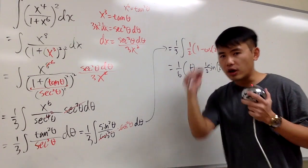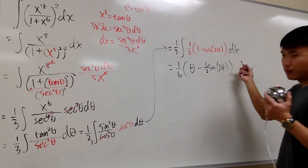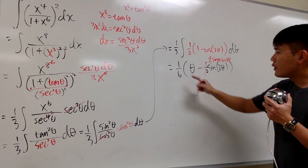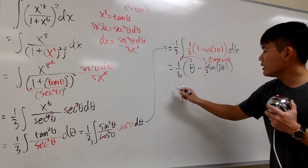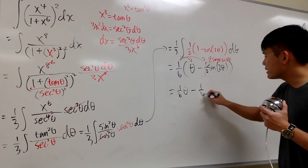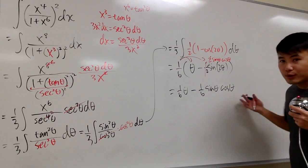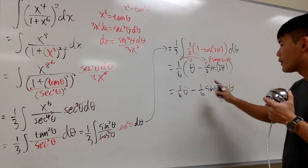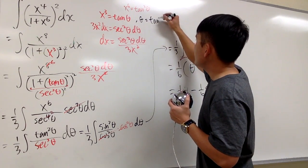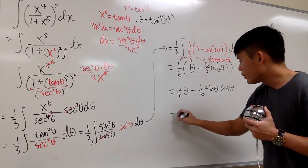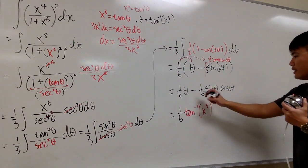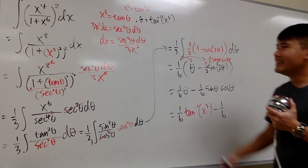Now we take everything back to the x world. We have a double angle: sine of 2 theta equals 2 sine theta cosine theta, so the 1/2 and 2 cancel each other out. Distributing the 1/6, we get 1/6 times theta minus 1/6 times sine theta cosine theta. Since x to the 3rd power equals tangent theta, taking the inverse tangent of both sides gives theta equals inverse tangent of x to the 3rd power. So the first term is 1/6 times the inverse tangent of x to the 3rd power.